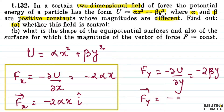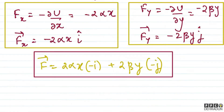So Fy vector equals −2βy ĵ. Now we have the net force vector: F = −2αx î − 2βy ĵ.